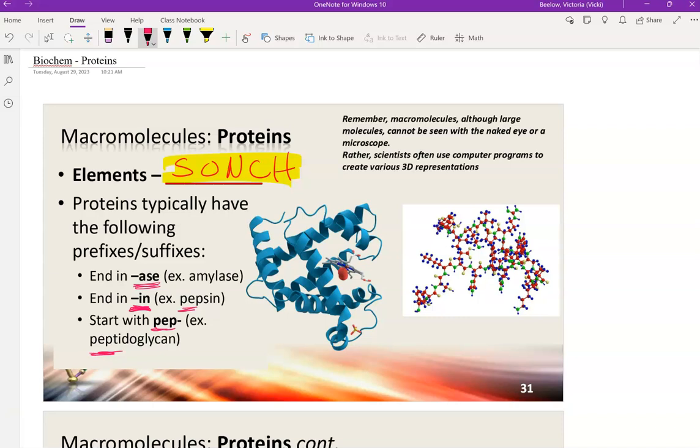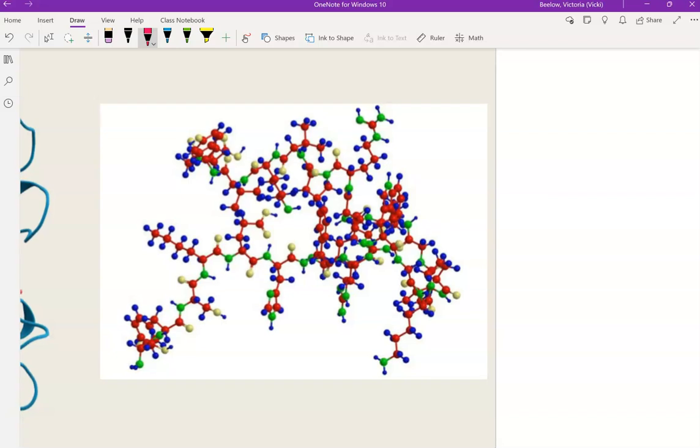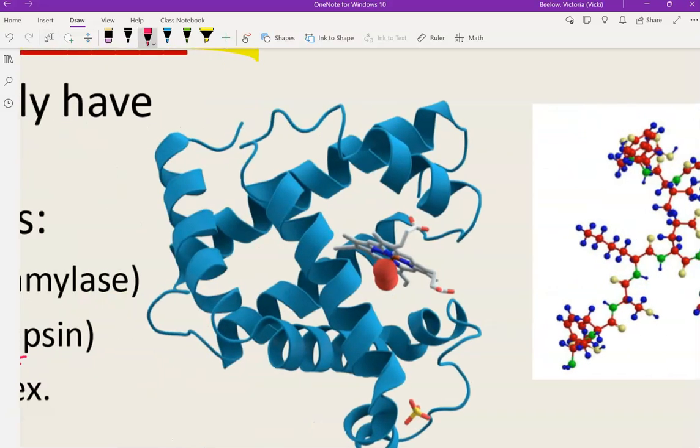And with macromolecules, again, these are large molecules. That's what that means, or some people call them biomolecules. We can't see them with the naked eye or with a microscope. So typically we're going to use computer programming and 3D images to represent what these look like. So proteins are usually pretty complex, they're pretty large in structure. Here's an example here.